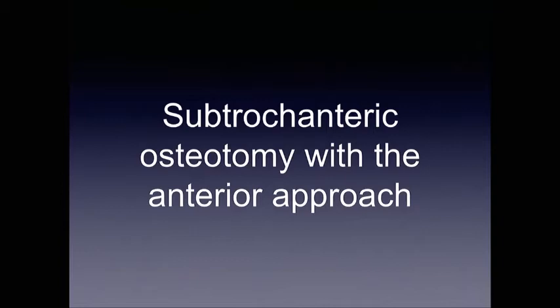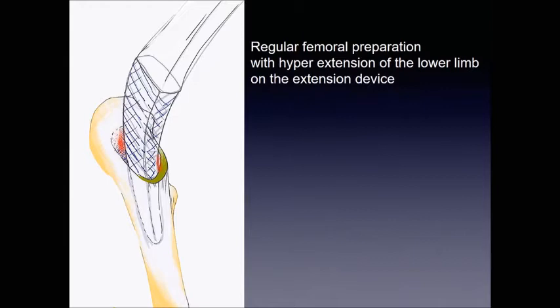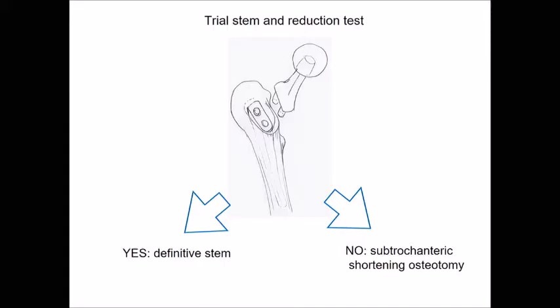I'm going to show you how you can do this subtrochanteric osteotomy with the entire approach. It looks crazy, but it is not at all. Because when you have this, the femur is quite high, so through the incision you see the level where you should do the subtrochanteric osteotomy. It's not a big problem. When I've done my cup, I start to broach — regular broaching or maybe custom-made broaching, depending on the shape. And then I try to make the reduction.